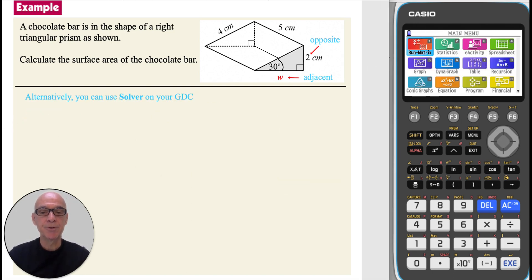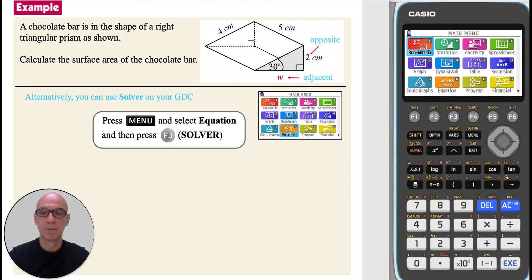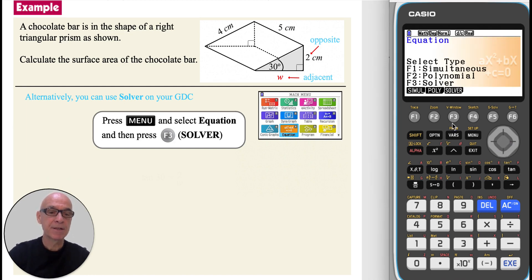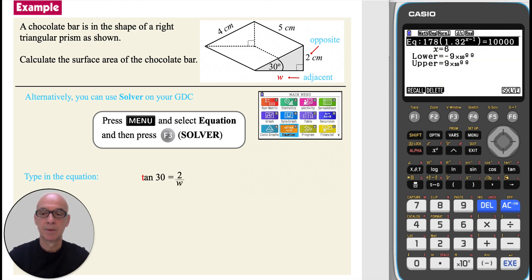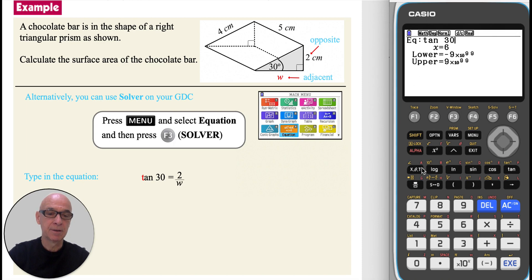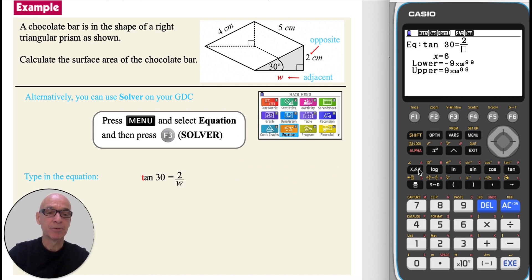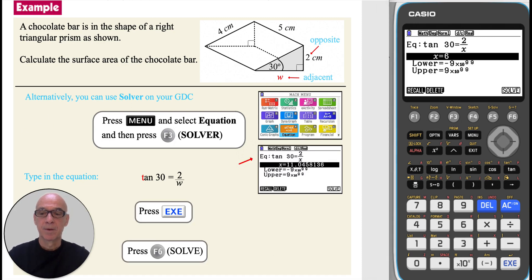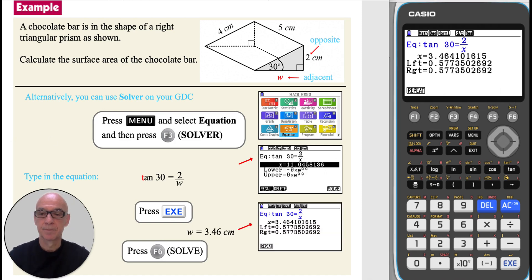Alternatively, you can use Solver on your calculator to solve the equation. From the main menu, select equation, then press F3 for Solver. Type in the original equation: press tan 30, then shift to access equals, press the fraction button, enter 2 for the numerator, scroll down, and press the x variable for the denominator. Press execute to enter the equation, then press F6 to solve. The width W is 3.46 cm.